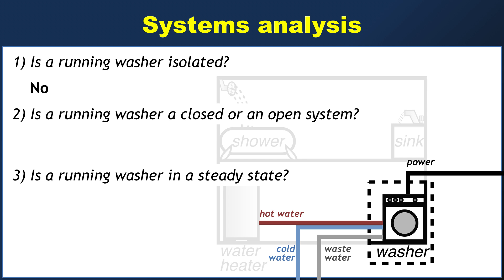On to the second question: is a running washer a closed or an open system? The most general correct answer is certainly that it is an open system because of all those water pipes — you can have hot water and cold water going in and waste water going out. But you could also say that it depends. At the very beginning of the wash cycle you have hot and/or cold water coming in, so at that point it is an open system. But then there are other times where it's basically just swishing around the water that's already in there — when that happens the system is effectively closed. So as long as you're precise about what part of the cycle you're describing, it could be appropriate either to describe it as a closed or an open system.